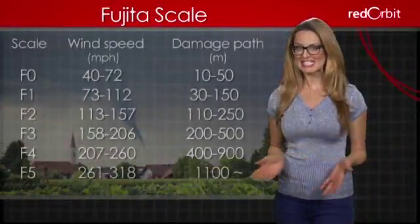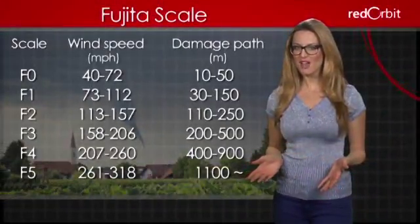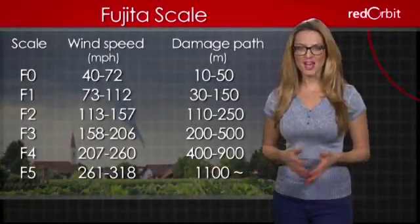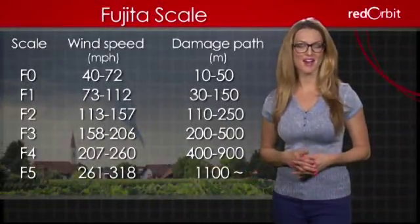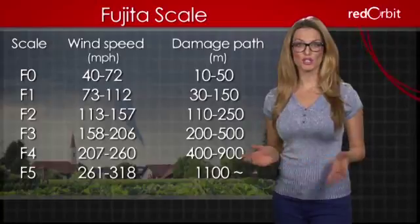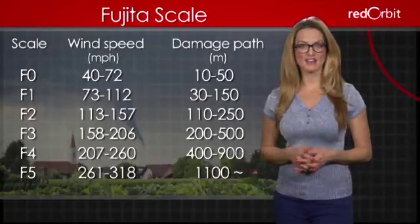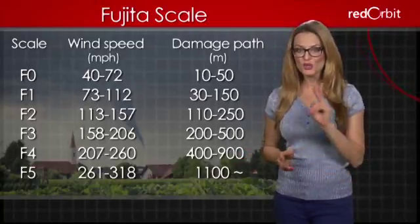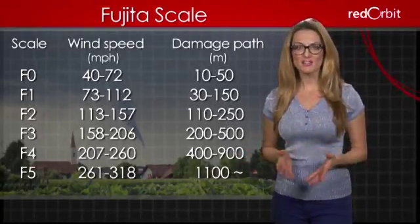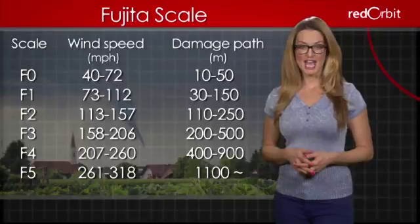Tornado intensity is rated on what's called the Fujita or F-scale. Where a tornado falls on the F-scale depends on two things: wind speed and amount of damage.